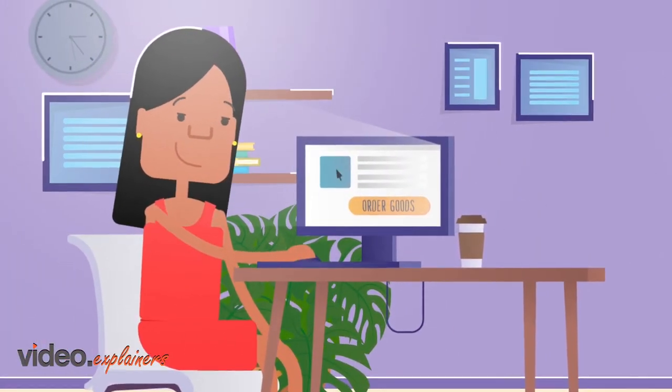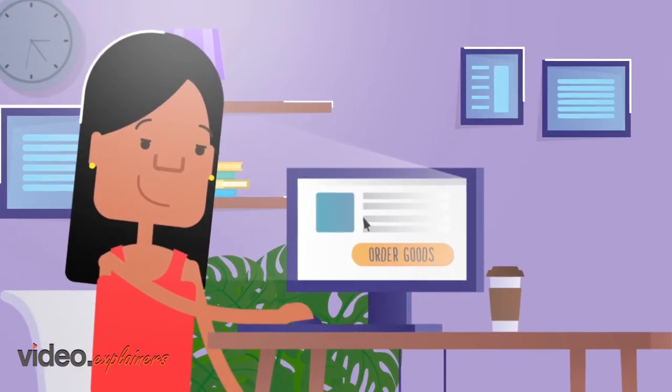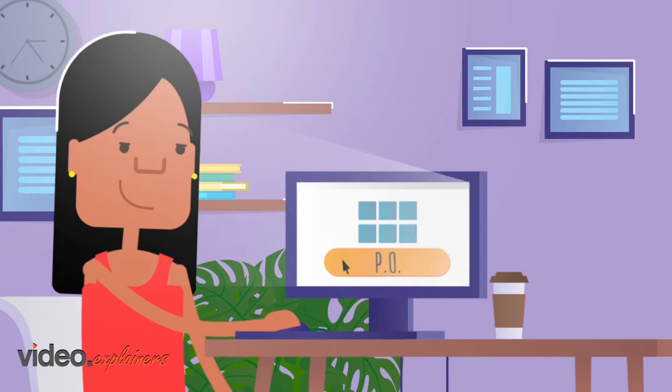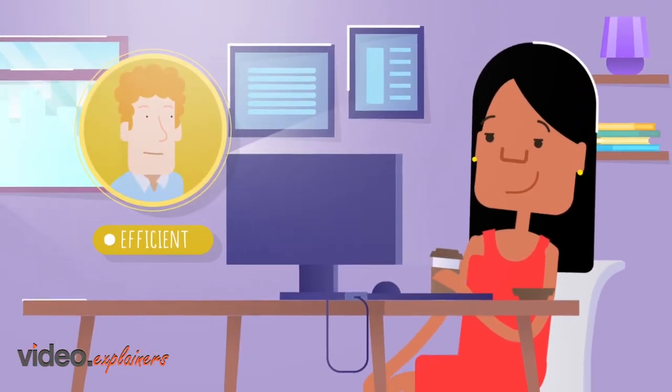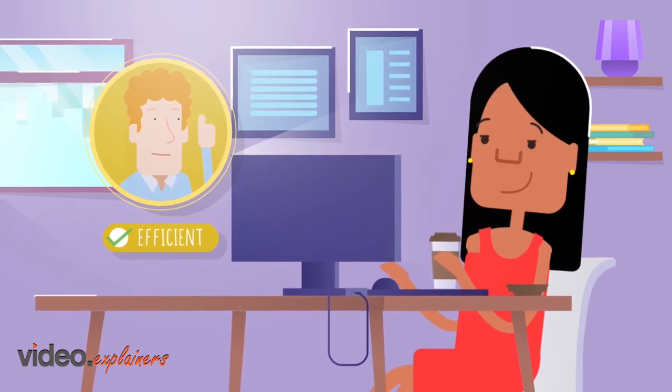Meanwhile, Lucille orders her widgets through HSBC's procurement system. Depending on region, this may be Fusion or BuySmart. Then Lucille raises a purchase order. This is the easiest, most efficient way for invoices to be paid and ensures suppliers are paid on time.